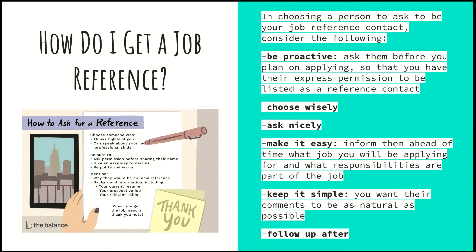Be proactive, ask for their permission, and make sure these are people you know in a professional capacity. Choose wisely — if you're asking a teacher, you're more likely to ask one you've worked with or been in class with for several years, someone who really knows you. Don't choose people who only know you personally, like family. Worst case scenario, if you have no previous work history and no teacher is willing to be a job reference — which is highly unlikely — then you might be able to put down your mom or dad. But asking a teacher first is definitely the way to go.